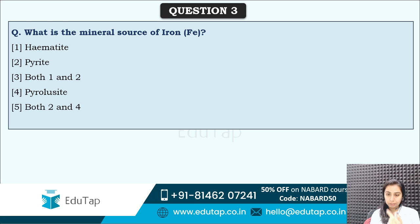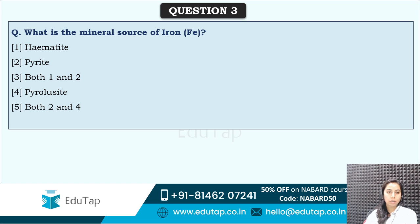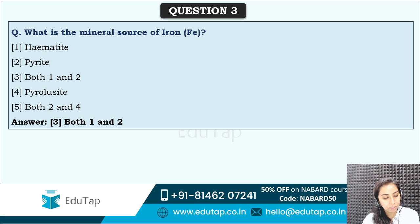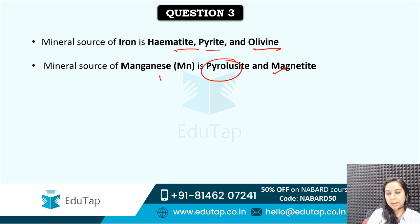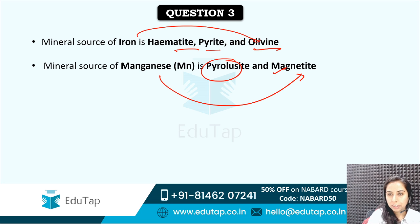What is the mineral resource of iron? This is easy. The mineral resource of iron is both hematite and pyrite. So hematite, pyrite and pyrolusyte were given here and you had to tell the mineral source. The mineral source is hematite and pyrite — both are the source of iron. Iron actually has three sources: hematite, pyrite and olivine. The mineral source of manganese is pyrolusyte as well as magnetite.